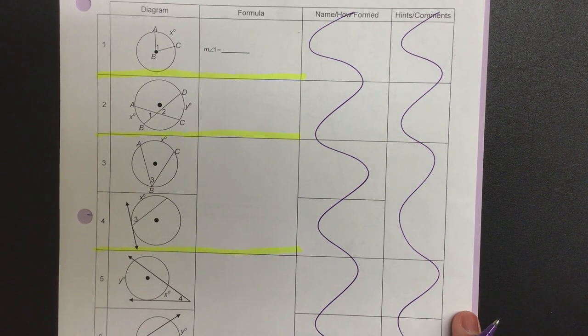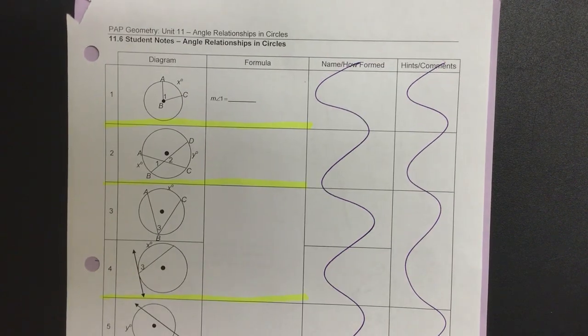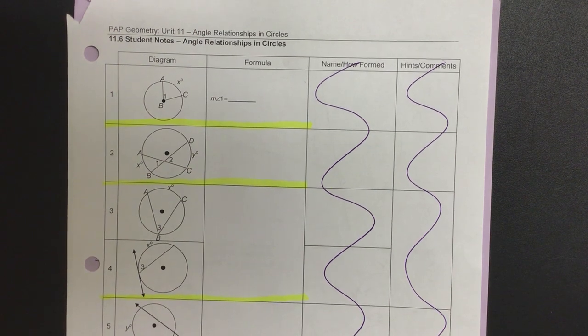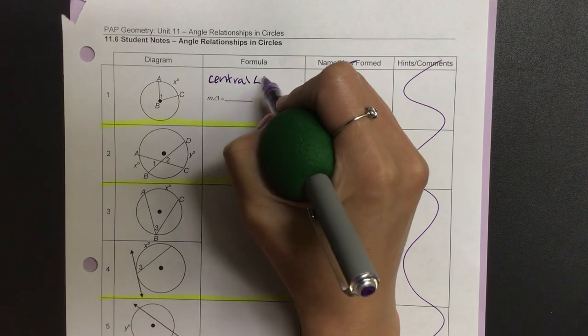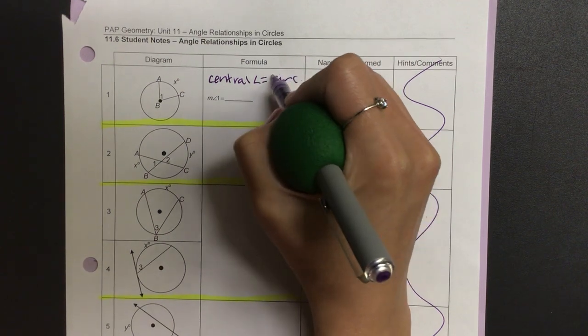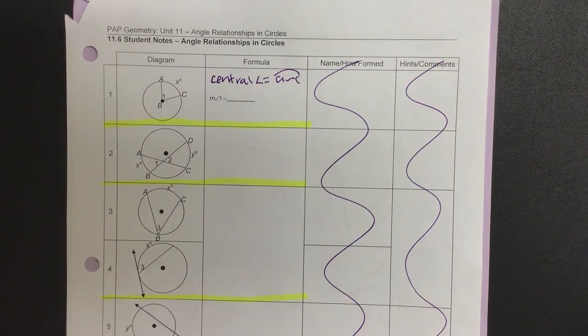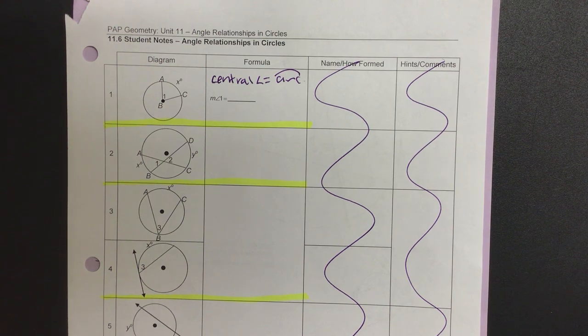Number one is basically a review. Central angle is always equal to the arc. So let's write out: the central angle is always equivalent to the arc. So that means if I know the arc is x, angle one is also x.